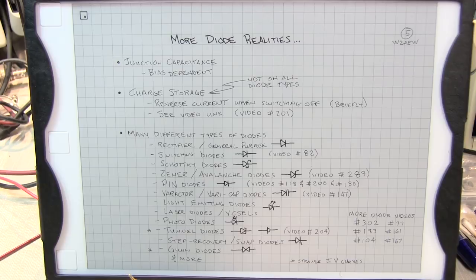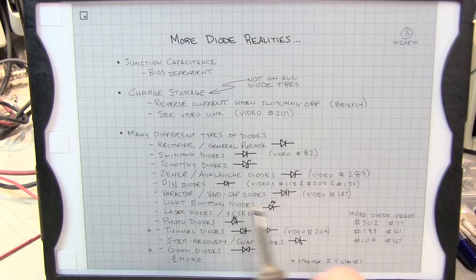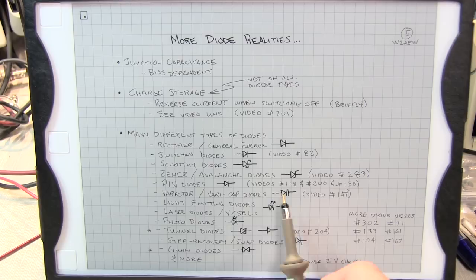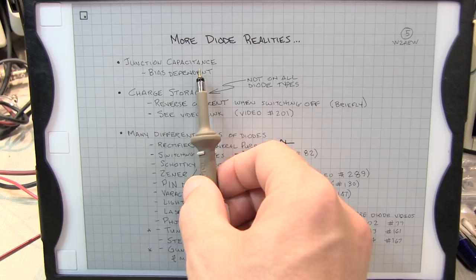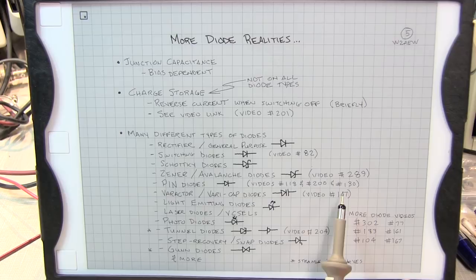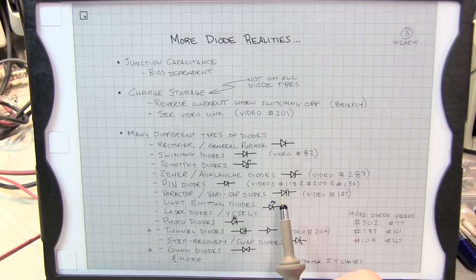Varactor diodes are often called varicap diodes, often have a symbol that looks like this where the cathode is drawn to look like a capacitor. And these diodes are specifically designed to have a very predictable and wide-ranging junction capacitance variation as a function of reverse bias, kind of exploiting this characteristic here. And you might want to check out video number 147 to learn more about these diodes, often used in electronic tuning applications for RF by making electronically tunable tuned circuits and things like that because now you've got a voltage variable capacitor.